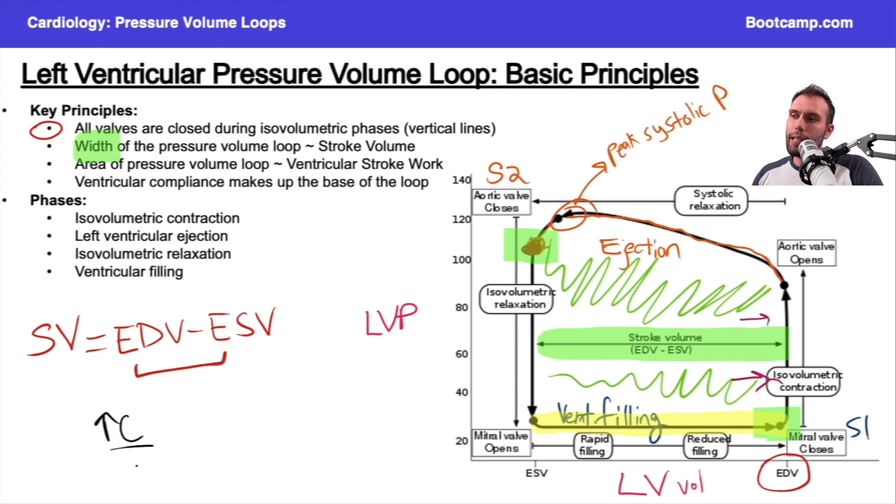They're able to change their volume at a given pressure much more easily. Same thing with the ventricle. If the ventricle has a high compliance, it can accommodate more ventricular filling.